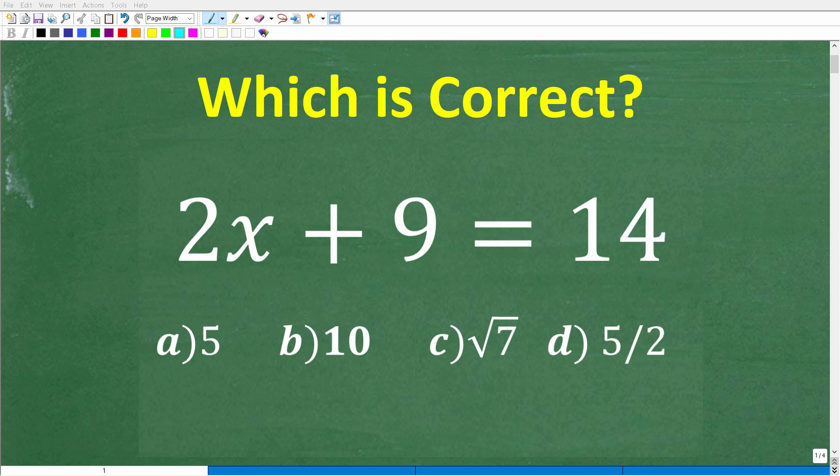Okay, so let's see if you know the steps to solve this simple algebra equation. Alright, so what is the problem? Well, we have 2x plus 9 is equal to 14, and we're trying to solve this equation for x.